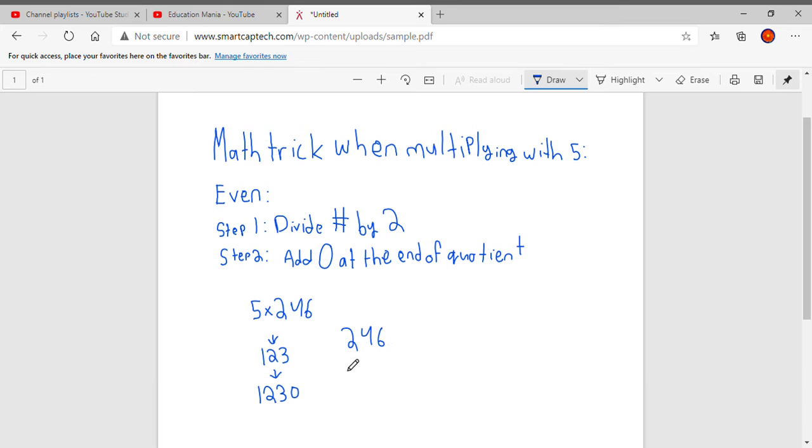But let's solve it this way just to be sure that this math trick actually works. So 6 times 5 is 30. 5 times 4 is 20, plus 3 is 23. And now 5 times 2 is 10, plus 2 is 12. So it does work because these are equal.